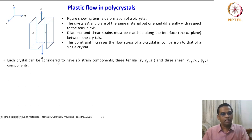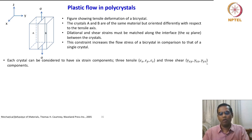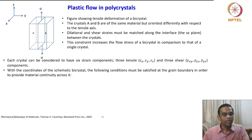Each crystal can be considered to have six strain components: three tensile — epsilon X, epsilon Y, and epsilon Z — and three shear: gamma XY, gamma XZ, gamma YZ components. We have sufficient background for that. With the coordinates of the schematic of the bicrystal, the following conditions must be satisfied at the grain boundary in order to provide material continuity across it.